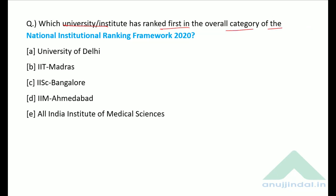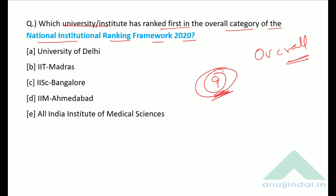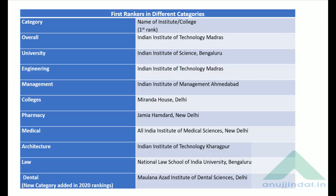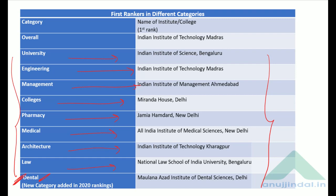Which university or institute ranked first in the overall category of the National Institutional Ranking Framework (NIRF) 2020? NIRF 2020 was launched with nine categories. In the overall category, IIT Madras is number one. In universities, IISc Bangalore tops; Engineering — IIT Madras; Management — IIM Ahmedabad; Colleges — Miranda House; Pharmacy — Jamia Hamdard; Medical — AIIMS New Delhi; Architecture — IIT Kharagpur; Law — National Law School Bangalore; Dental — Maulana Azad Institute of Dental Sciences, Delhi.